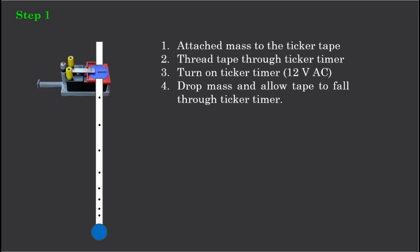We simply attach the mass to the ticker timer with some masking tape. We thread the ticker timer tape through the ticker timer. We turn on the ticker timer to 12 volts and simply drop the mass and allow the tape to fall through the ticker timer.